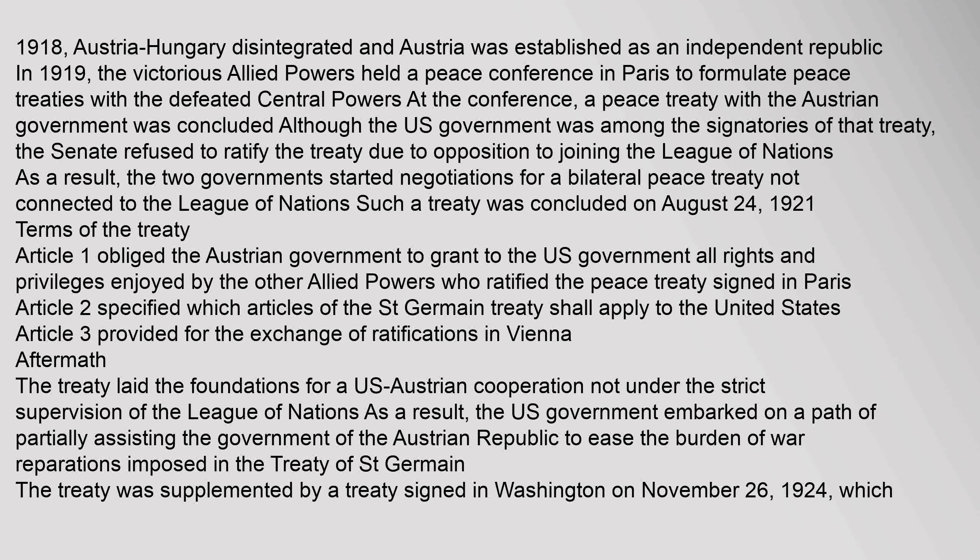Such a treaty was concluded on August 24, 1921. Article 1 obliged the Austrian government to grant to the U.S. government all rights and privileges enjoyed by the other Allied Powers who ratified the peace treaty signed in Paris. Article 2 specified which articles of the Saint-Germain Treaty shall apply to the United States. Article 3 provided for the exchange of ratifications in Vienna.